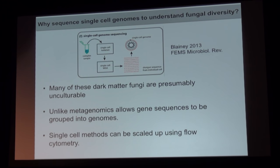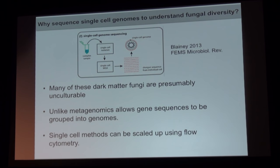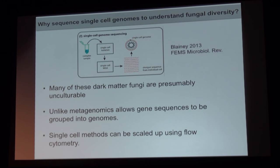If we were to use metagenomic approaches we wouldn't be able to group the genes we get from sequencing into genomes. The goal here is to create a genome, and because of the ability to separate cells by flow cytometry we can scale this up to a very large extent.